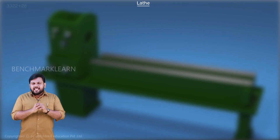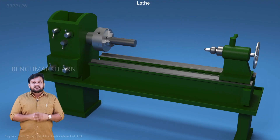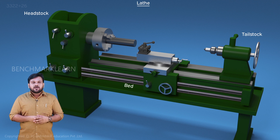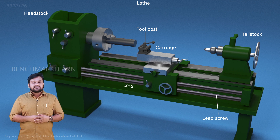A lathe has the following principal parts: bed, headstock, tailstock, carriage, tool post, lead screw, and feed mechanism.